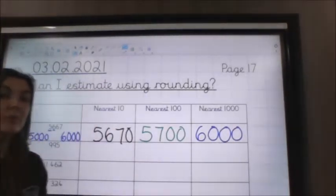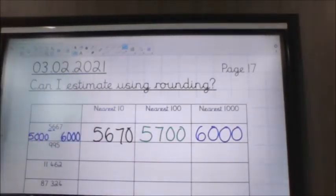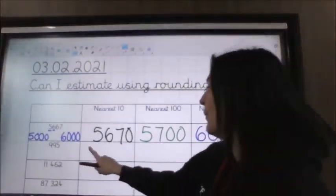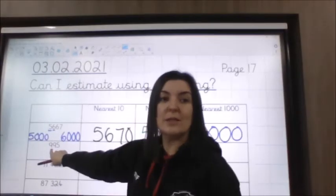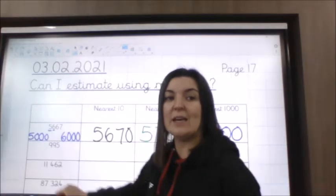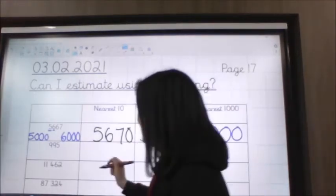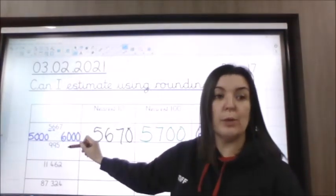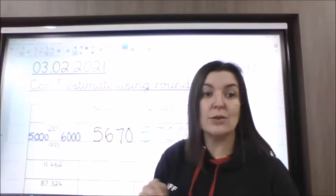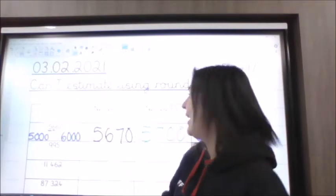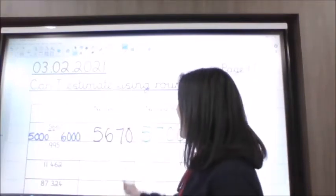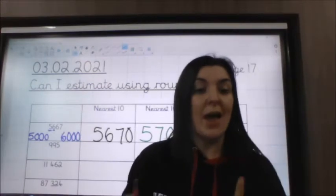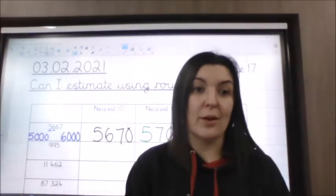So what I would like you to do now is pause the video and have a go at this one. This number is 995. I want you to have a go in your purple book, rounding 995 to the nearest 10, 100 and 1,000, and then we will have a look at it together.